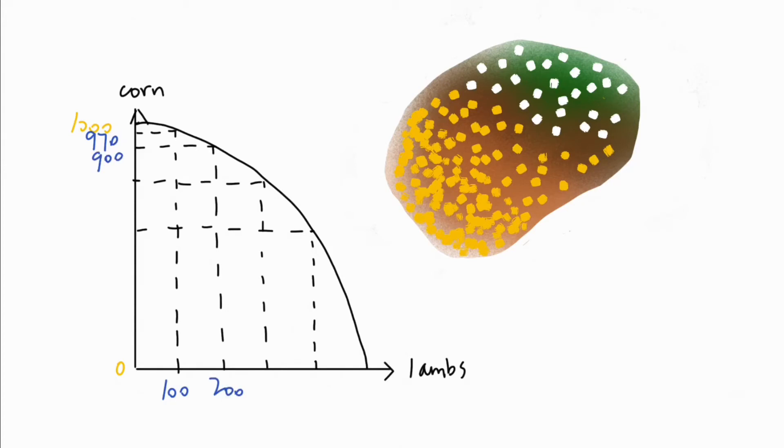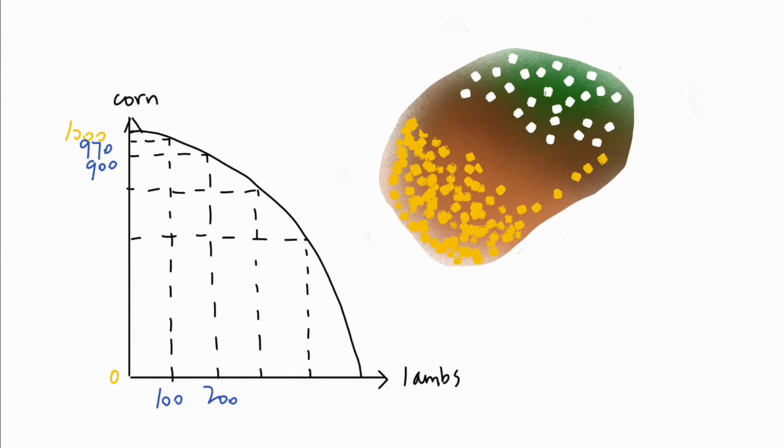But moving on, perhaps the next piece of land is equally good for lambs and corn. We will have to give up 100 units of corn for 100 lambs, leaving us with 800 units of corn.